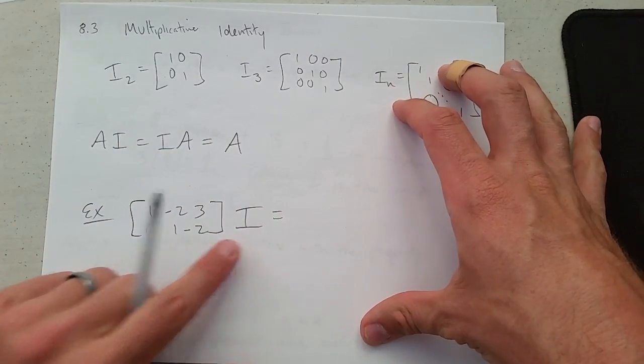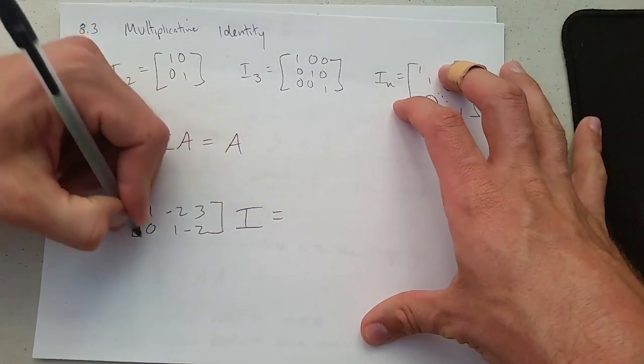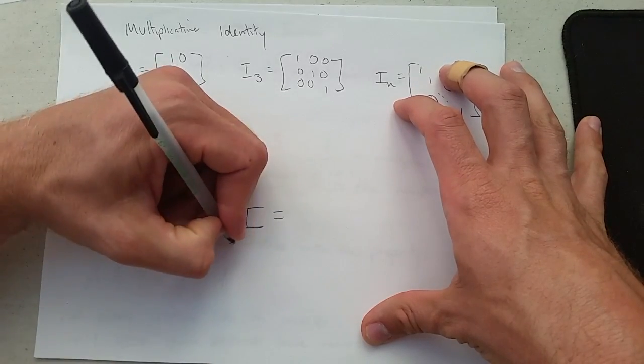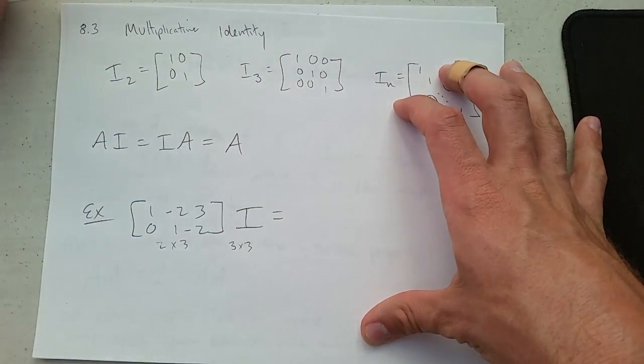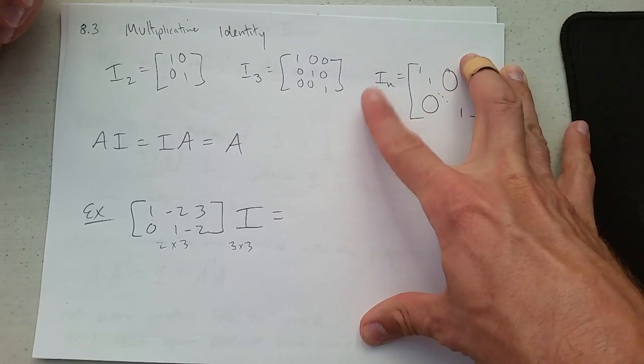So what identity do I need here? I have two rows, three columns, so I need a 3x3 over here. So here's the 3x3 I need.